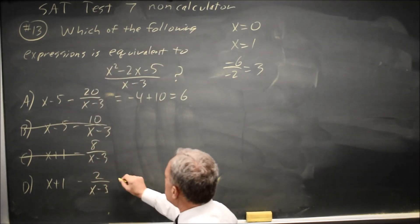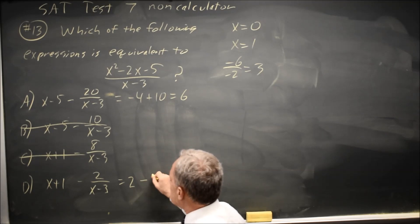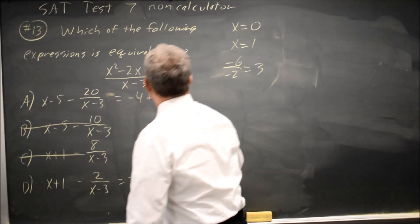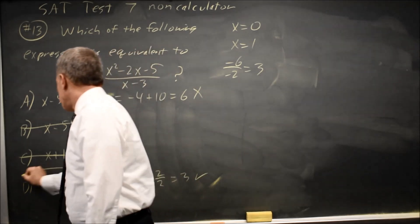And at 1, this is 1 plus 1 equals 2 minus 2 over 1 minus 3 is negative 2. So 2 plus 1 equals 3. That does work. Choice A does not. So the correct answer would be D.